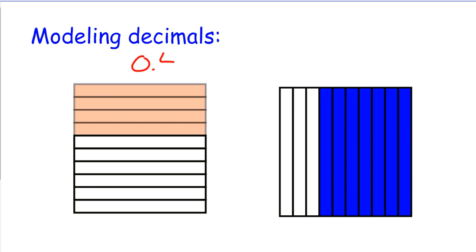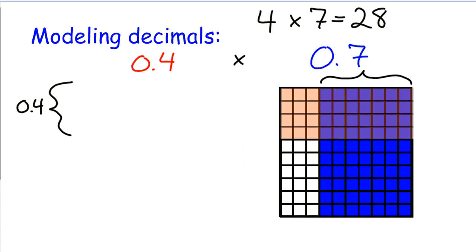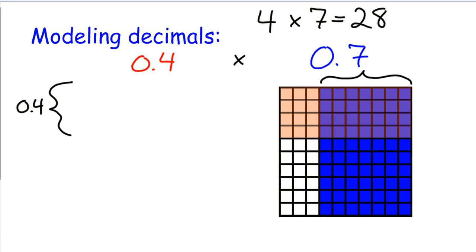Here we have a model of 4 tenths again, and over here in blue we have a model of 7 tenths. Now, we know that 4 times 7 is equal to 28, but what happens when we have 4 tenths times 7 tenths? If you could imagine this as a rectangle, and we have an area over here of 7 tenths, and on this figure we have an area of 4 tenths. When we combine them,